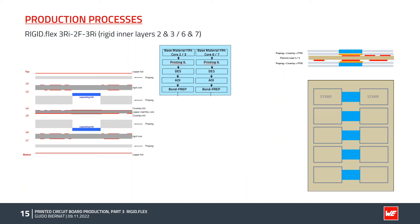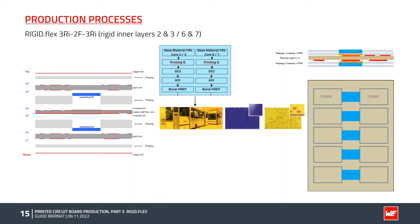The rigid inner layers run through the standard inner-layer production process: exposure, development, etching, optical inspection, and pretreatment. Then the rigid inner layers are transported to the assembly point in the pressing department.